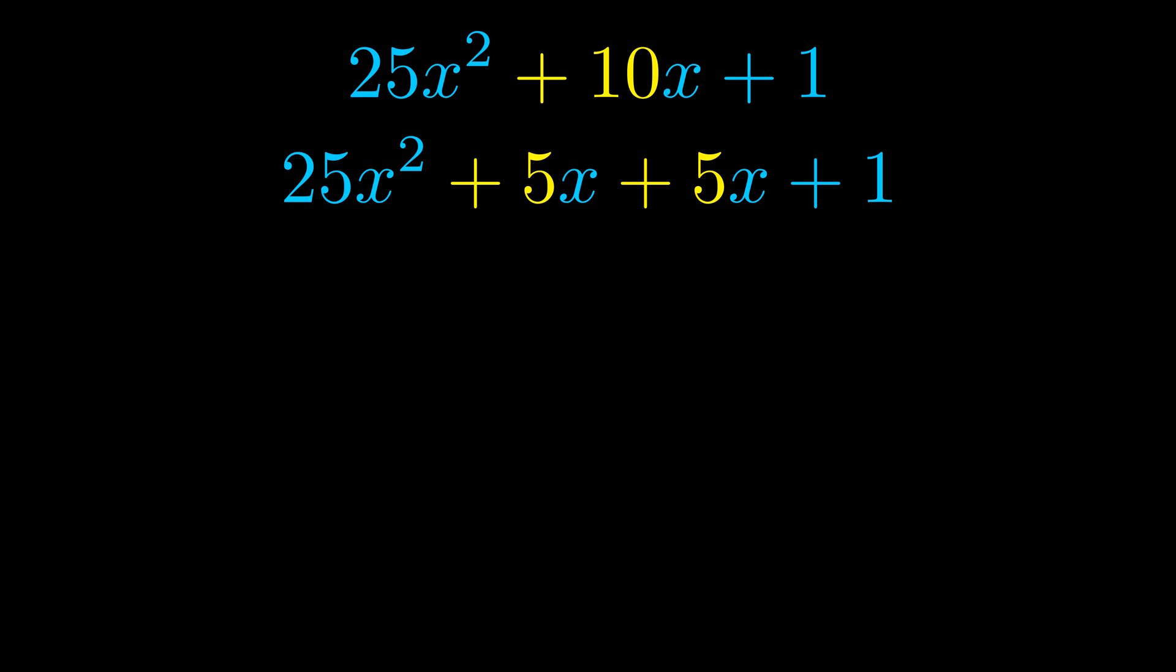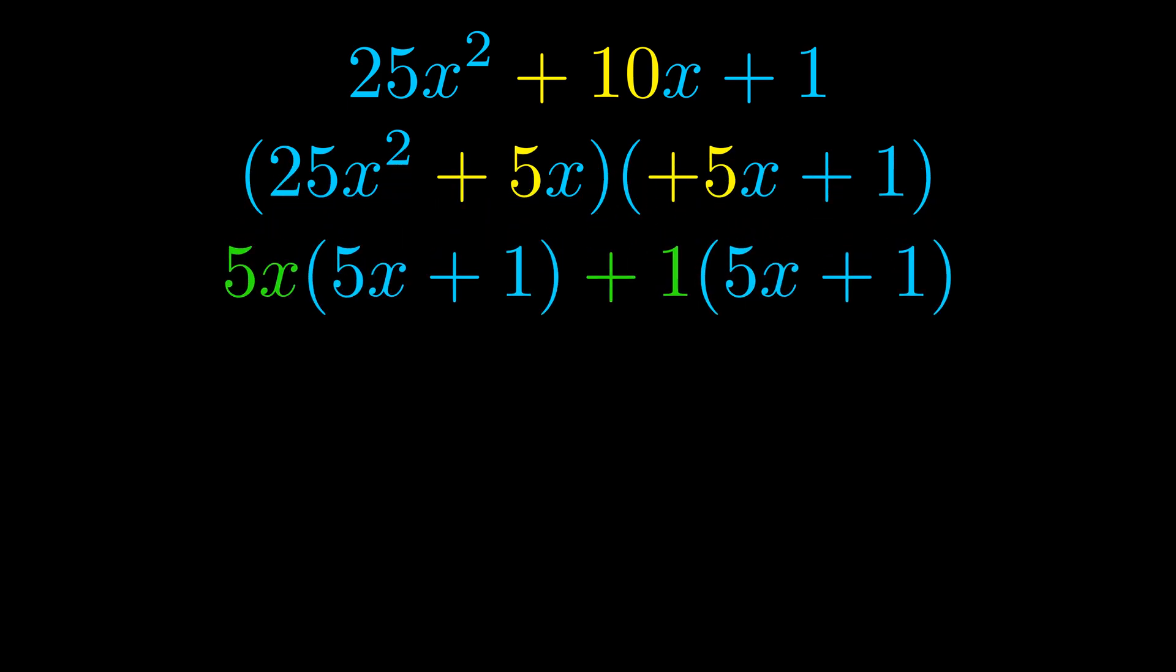Once we've done this, we go ahead and we put parentheses around the first term and the last term. And we do that so that we can take the greatest common factor out of both terms. We can see the greatest common factor is now outside in green. Notice also how what remains inside of the parentheses is the same in both cases. The blue values are the same. Those blue values will become one of our factors, and we will combine the two green values, the GCFs that we pulled out, to get the other one. And that is our fully factored equation.